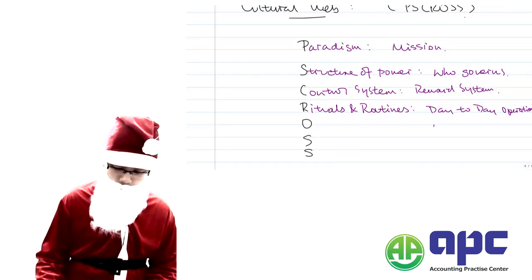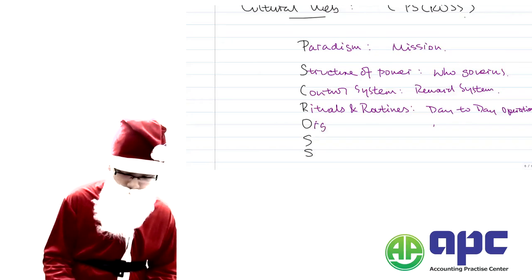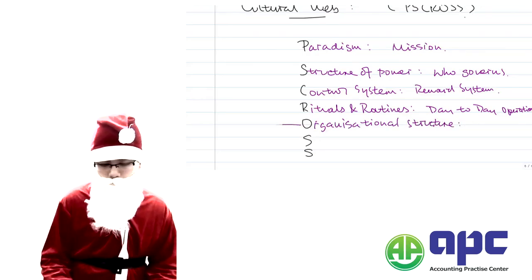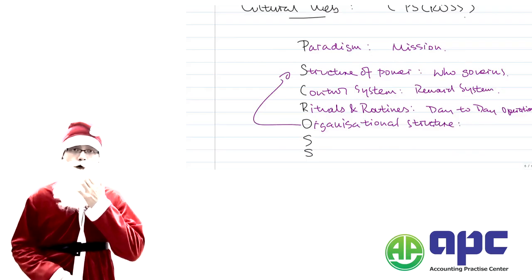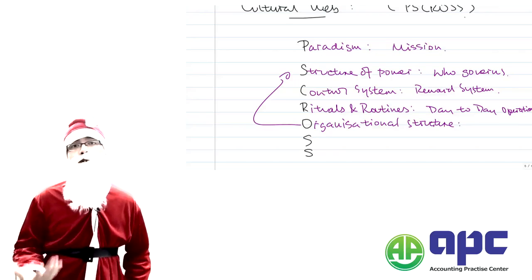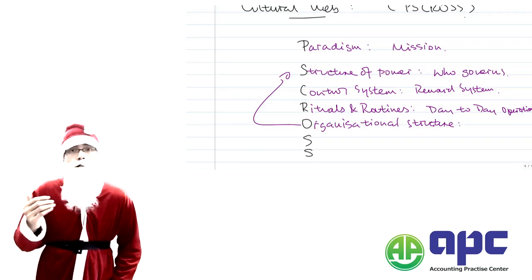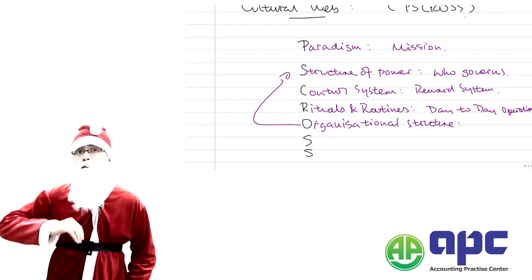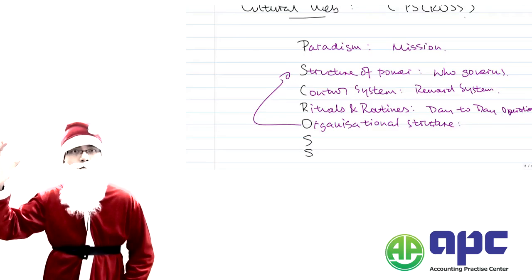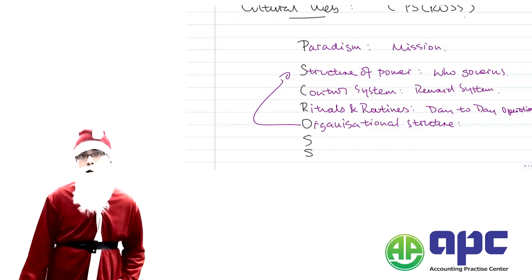The next O stands for Organisational Structure. This can be linked with the structure of power, as the organisational structure can be either flat or tall. In a tall structure — such as in public sector organisations — if an employee has an idea and wants the company to implement it, it takes a lot of time. As a result, employees may be demotivated.